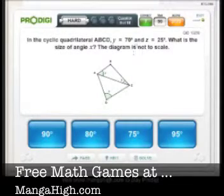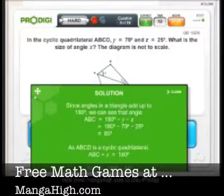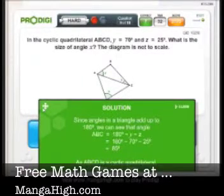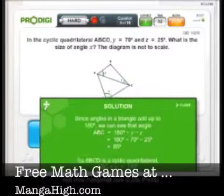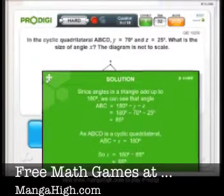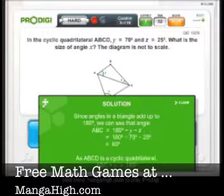So in the cyclic quadrilateral, Y equals 70 and Z equals 25. What's the size of angle X? Well I actually have no idea, so I'm just going to press solve here. Okay, they add up to 180 minus 75.